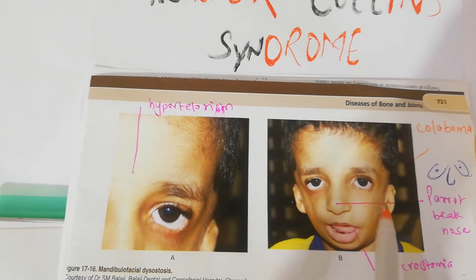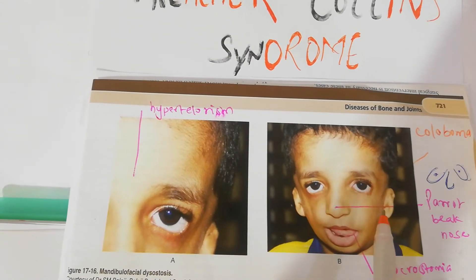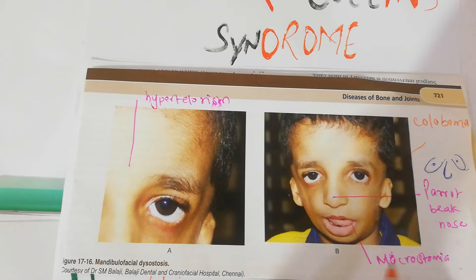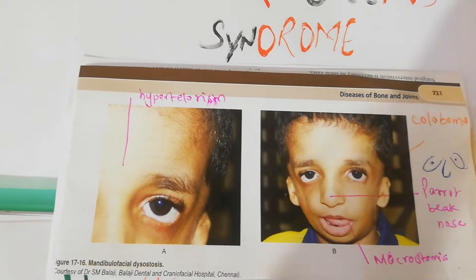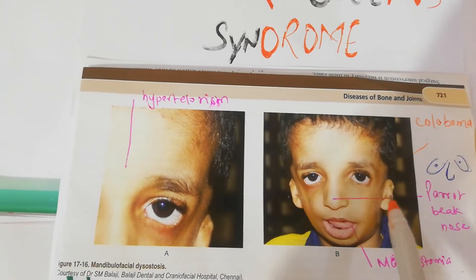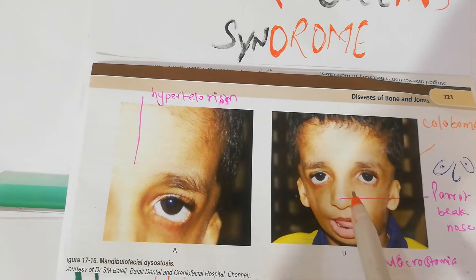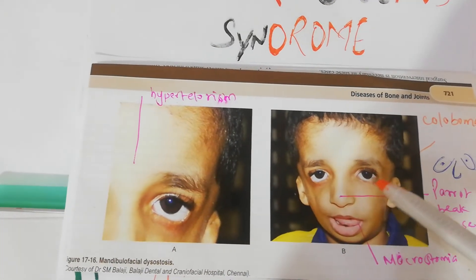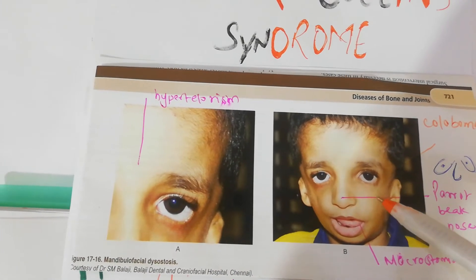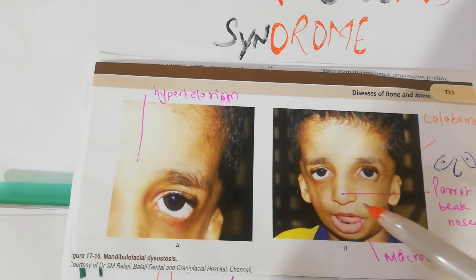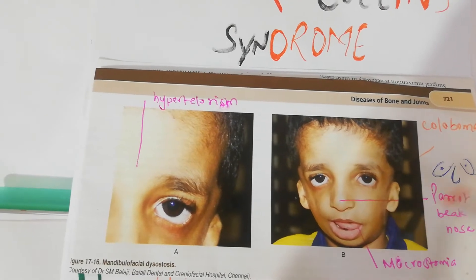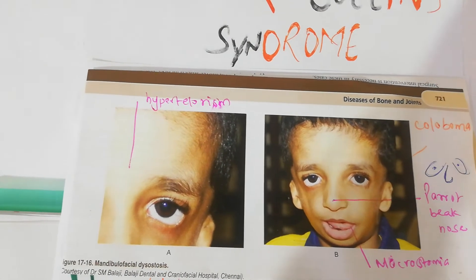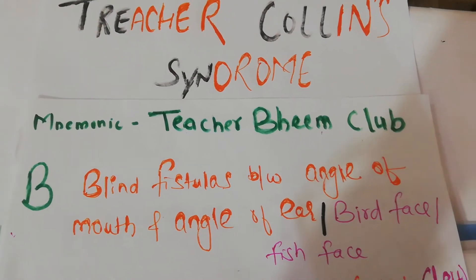You can see a small ear — small ear leads to hearing loss — and macrostomy. You can also see a blind fistula, which is a very deep small pit-like structure located between the corner of the eyes and the corner of the ear.